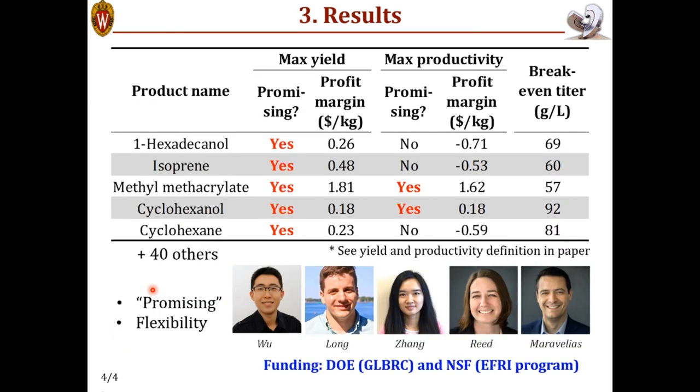And here's the results. And we're only showing five examples here. You can see for each product under different production conditions, like maximum yield or maximum productivity. Is it promising? Which means does it satisfy all the screening criteria? And what is the profit margin? We also estimated the break-even titer that would render zero profit margin for each product.